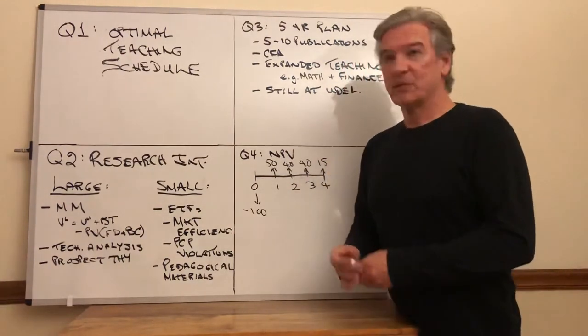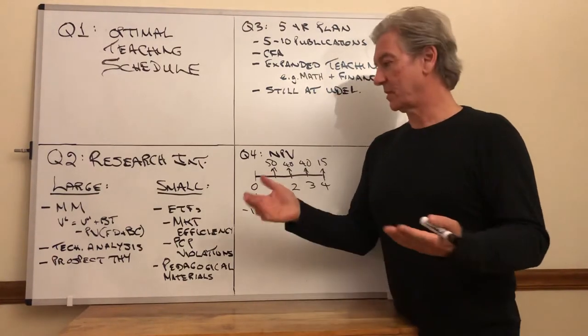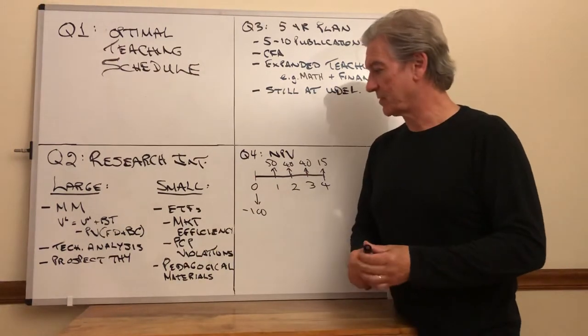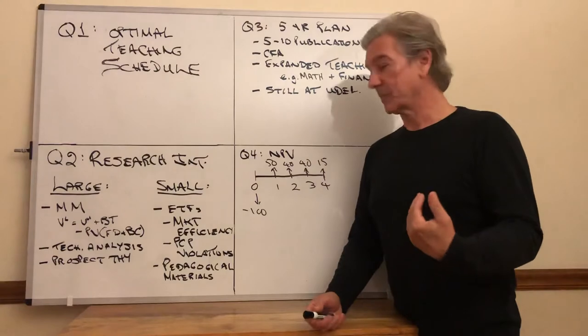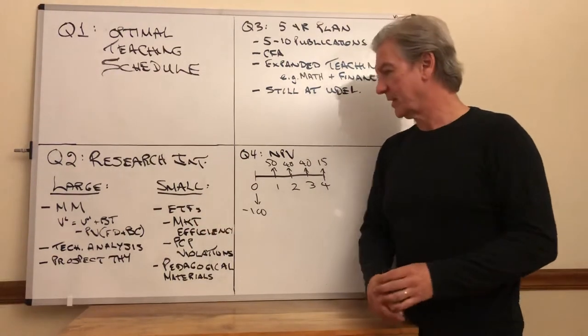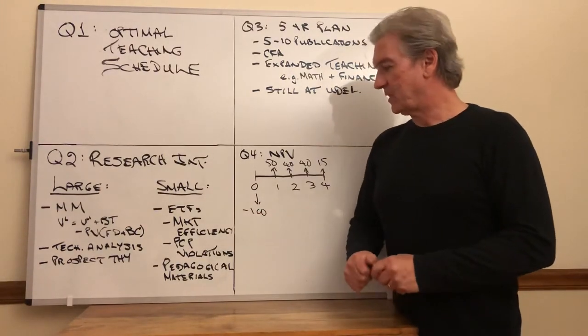For example, September 2008, the SEC put a restriction on trading financial stocks, in particular shorting financial stocks. You can't short the individual financial stocks but you can still short XLF which is the sector spider for the financial sector.